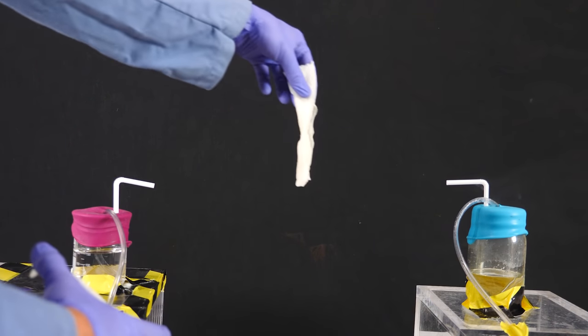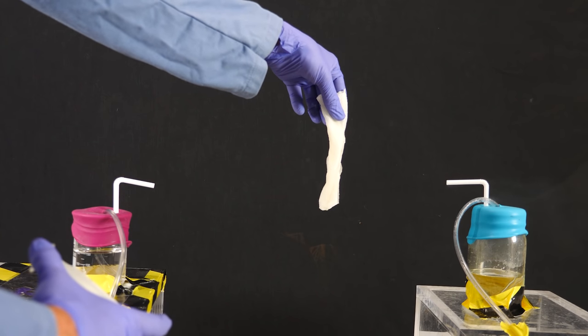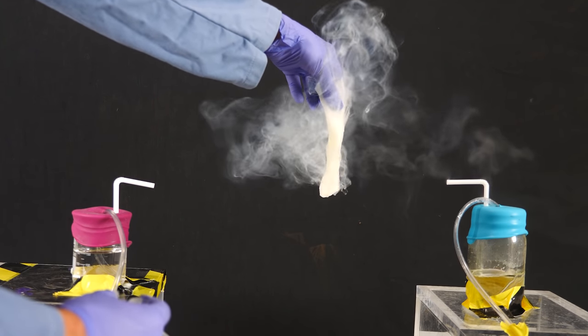You can also just put the ammonia on a cloth near the hydrogen chloride, and you'll get the same type of fuming.